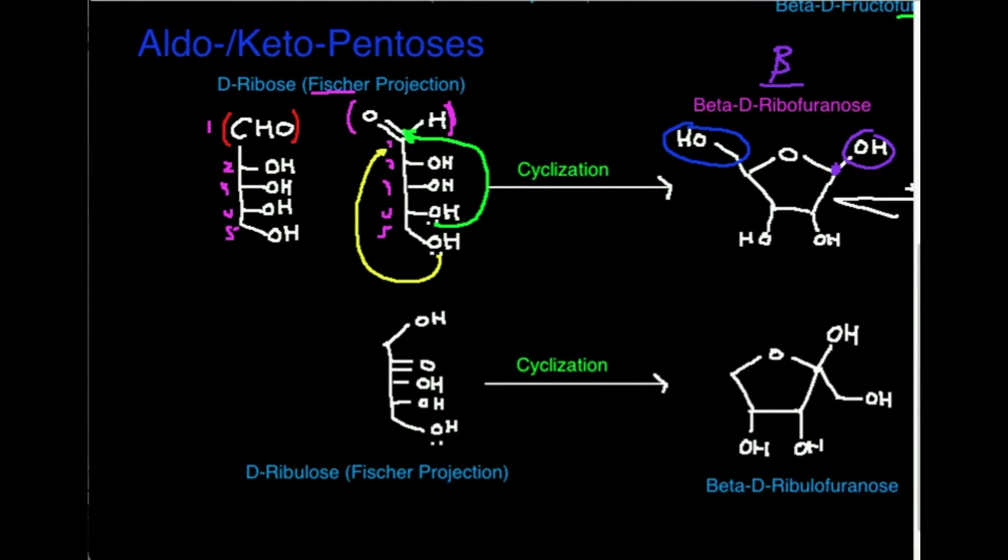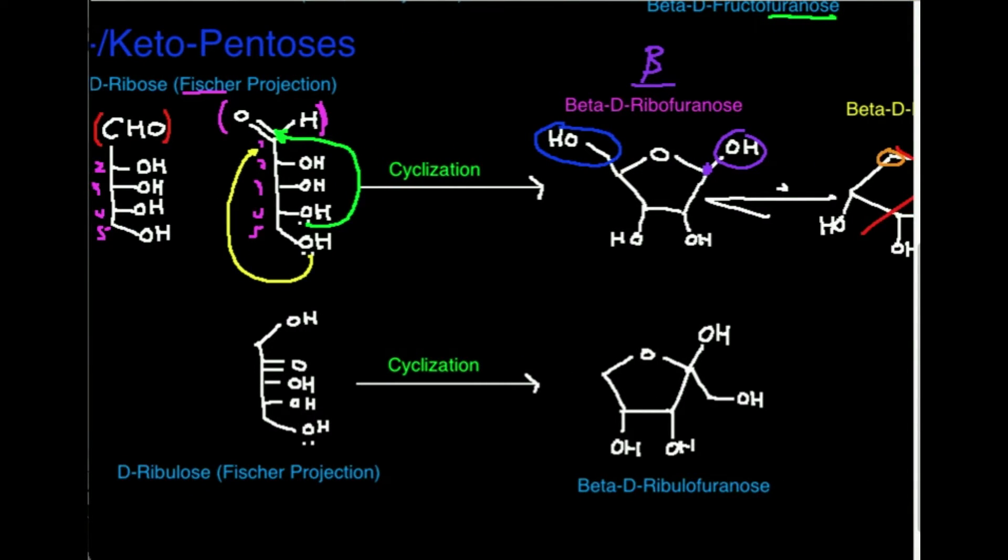Now, that was an aldopentose. Let's look at a ketopentose, and we're going to look at one that's very similar to ribose. The ketopentose version of it is called ribulose. Make sure you distinguish that from ribose. This is ribulose. Ribulose has the potential for cyclization, but it really doesn't occur a lot. We'll talk about why that is. Now, if you did this with this oxygen right here, so if we label these again, this is 1, 2, 3, 4, and 5.